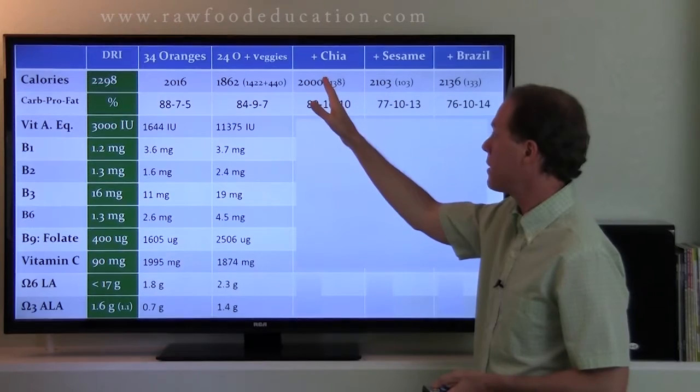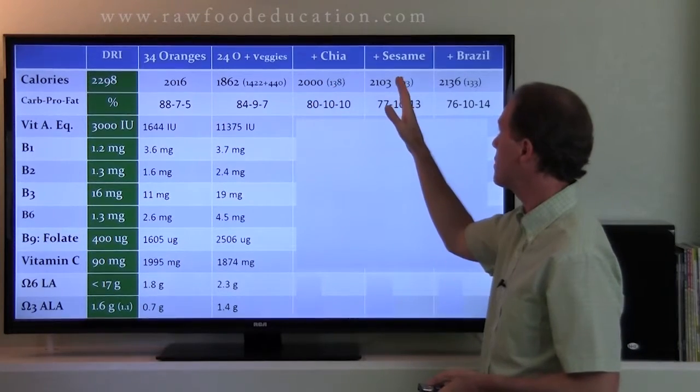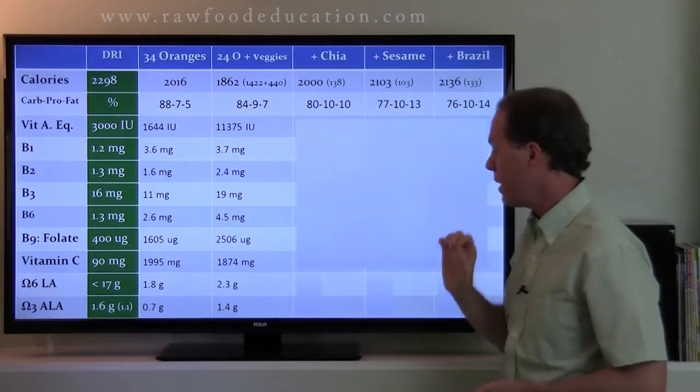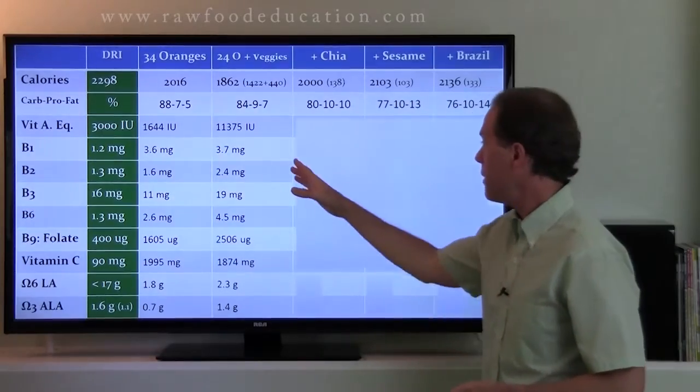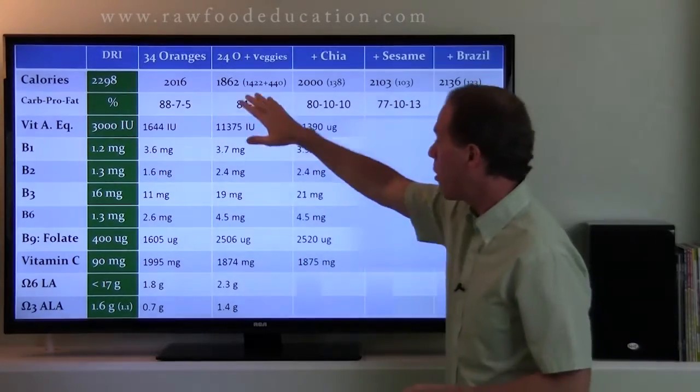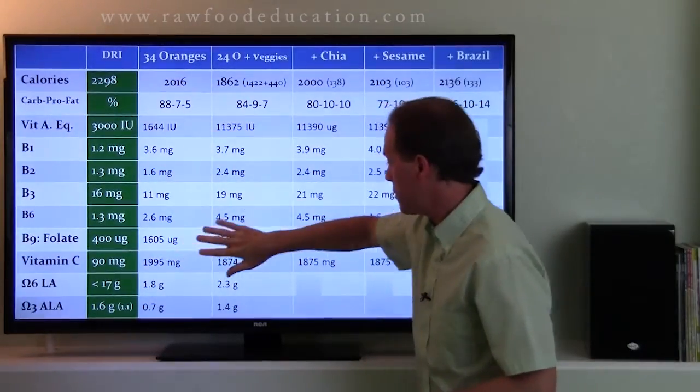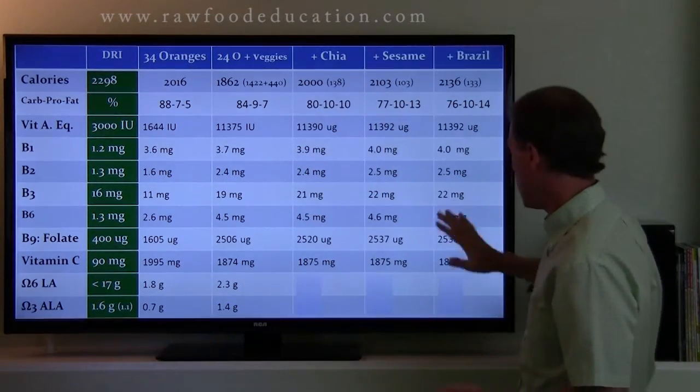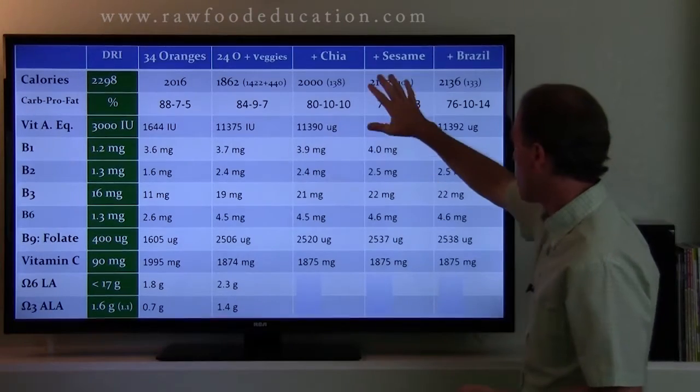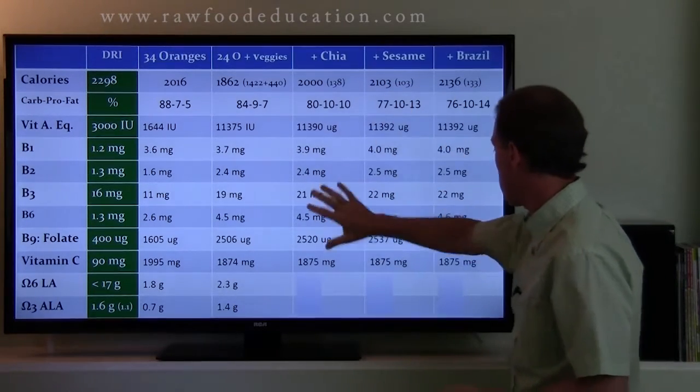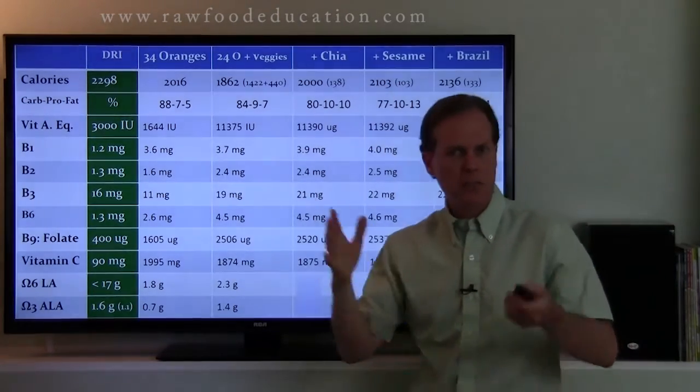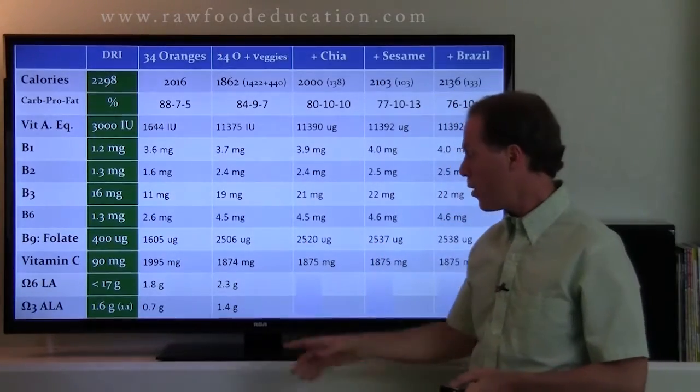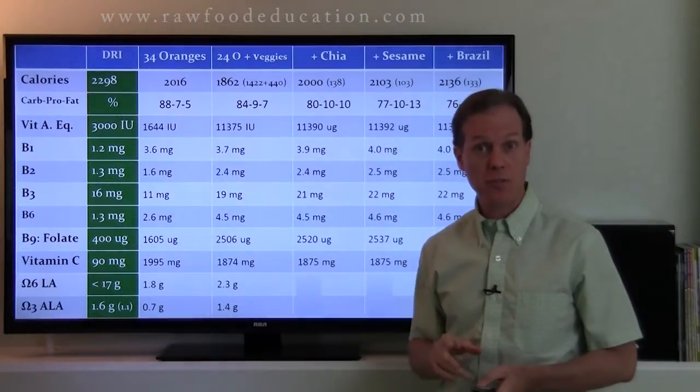So just like last time, now we make additions. Add some chia seeds, add some sesame seeds, and then add a Brazil nut. And you know, for all of these, we were already good in these various nutrients, other than the fat, and the bottom line is everything here is still really good. The seeds and nuts didn't add a real lot of this other stuff. So we're basically good there.